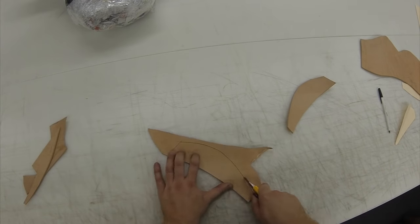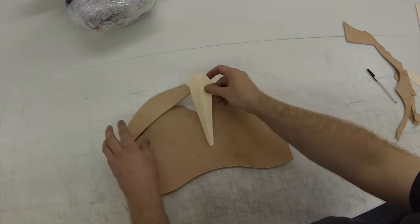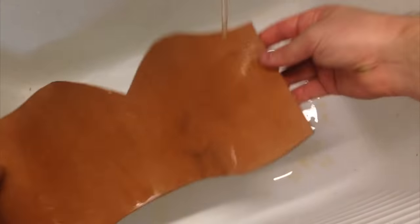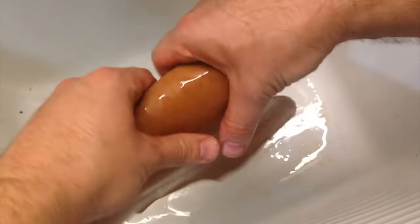I love to use veggie tan because it's water formable, wax hardenable, you can dye it any color you want, you can do custom tooling on it, and it's really easy to work with.